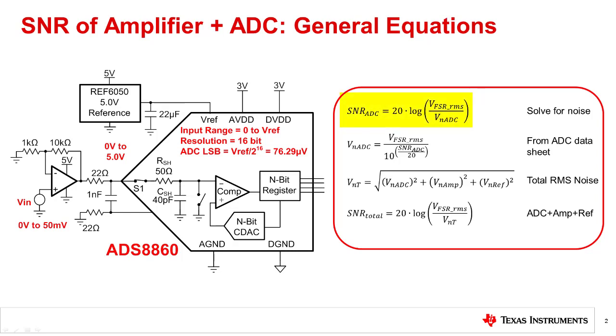The equation on the top is the general equation for SNR. Solve this equation for ADC noise, denoted as VN_ADC. Then add all three noise components as the square root sum of the squares. Finally, it is useful to translate the total noise back to a signal-to-noise ratio, as this will directly relate to our measured results.